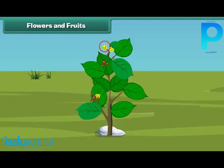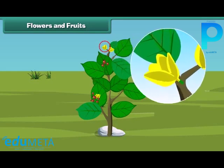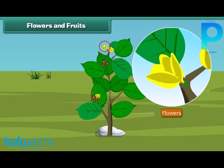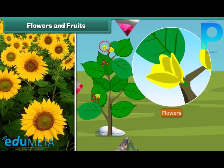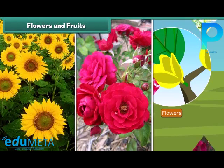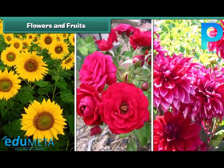Friends, now let us know about the most attractive and most beautiful part of the plant. Yes, that is the flower. Flowers are of different colors and types like sunflower, rose, and dahlia, and so on.